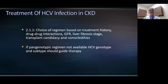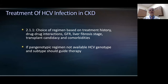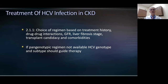When selecting an individual regimen, the choice should be based on treatment history, the potential for drug-drug interactions, the GFR, liver fibrosis stage, transplant candidacy, and comorbidities. We are less concerned about the GFR now with widening experience using differing regimens. Very importantly, if a pan-genotypic regimen is not available, hepatitis C genotype and subtype should guide therapy.